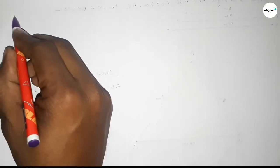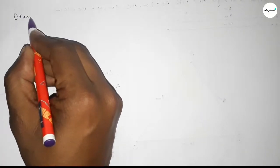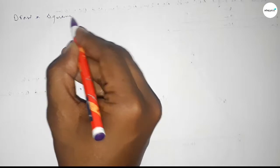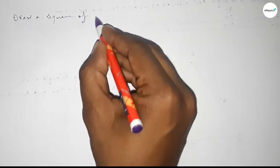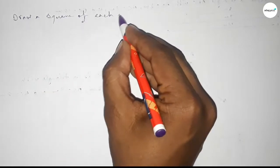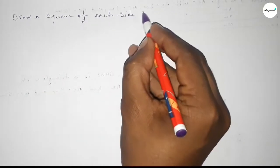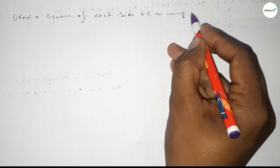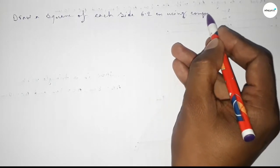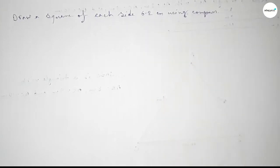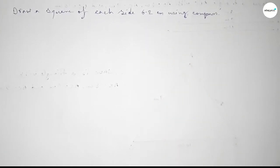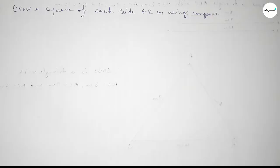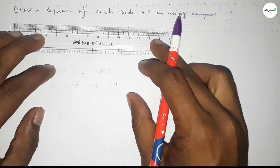Hi everyone, welcome to SI Share Classes. Today in this video we have to draw a square of each side 6.2 centimeters by using a compass. So let's start the video.